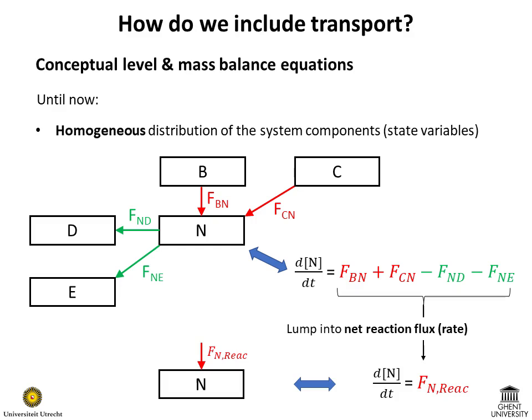We lump the fluxes representing these processes into one quantity and call it the net flux due to reactions, or the net reaction rate. This can be represented in a simplified conceptual diagram where there is only one arrow going into the state variable n.